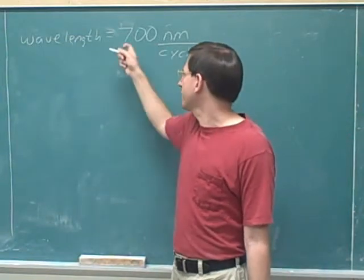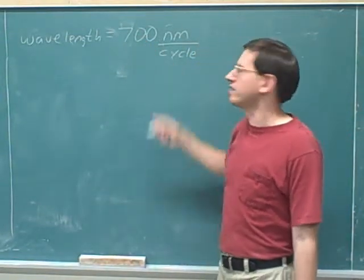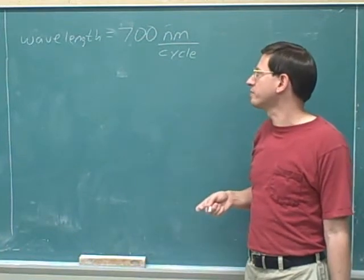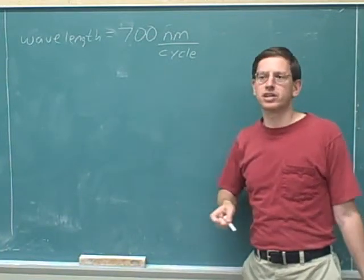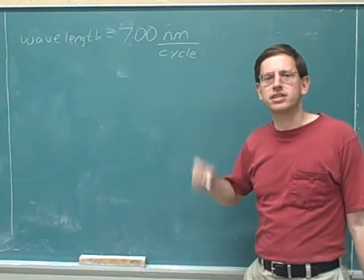Red light has a wavelength of 700 nanometers per cycle. The wavelength of red visible light is 700 nanometers per cycle. What does that actually tell us about red light?